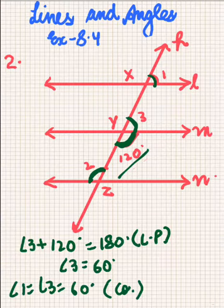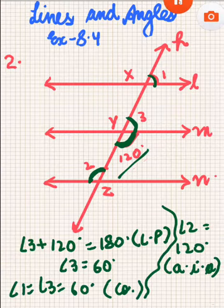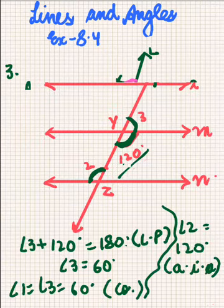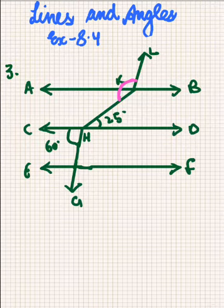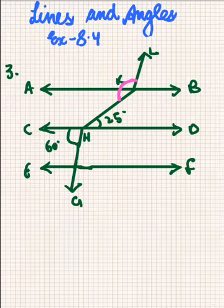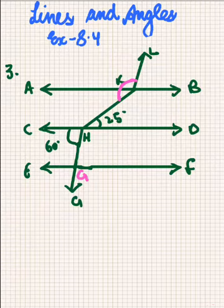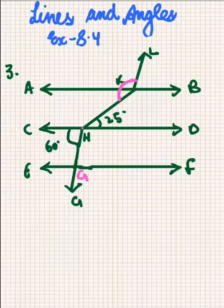So this was about Question Number 2. Now in Question Number 3, we are given that AB is parallel to CD, which is parallel to EF, and GH is parallel to KL. We have to find angle HKL, which means we have to find this whole angle.